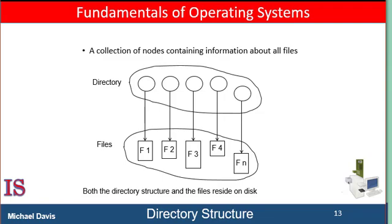Fortunately, most file systems support names of up to 255 characters, so it's pretty easy to select unique file names — that hasn't always been true. In earlier versions of Microsoft DOS, we were allowed only 11 characters: an eight-character name and a three-character extension. Fortunately that was changed a long time ago. Even a single user on a single-level directory might find it difficult to remember the names of all the files as the number of files increases. It's not uncommon for a user to have hundreds of files on one computer system and an equal number on another.